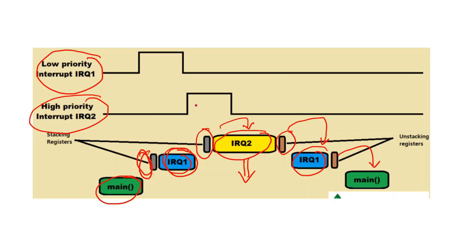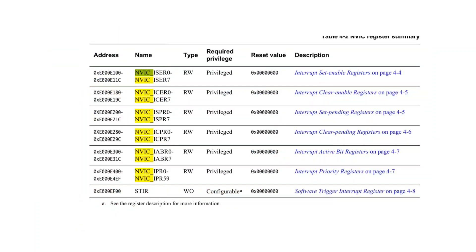Now let's see what different types of registers are present in the ARM Cortex-M4 processor for prioritizing interrupts. There are a total of 60 such registers, from NVIC IPR0 to NVIC IPR59 — 60 interrupt priority registers for configuring 240 different interrupts.